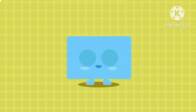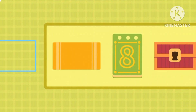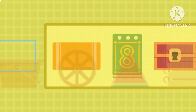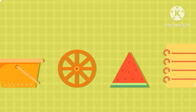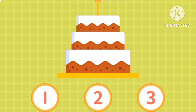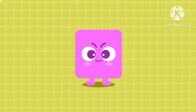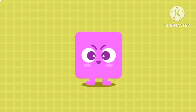This is a rectangle. These are rectangle shapes. Can you find them? That's not a rectangle. That's not it. Yes, that is a rectangle. Now can you count how many rectangles are there? There are three.